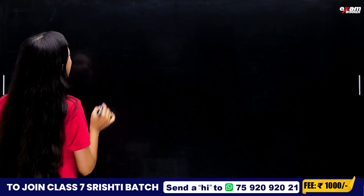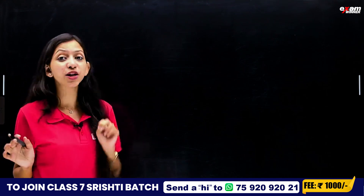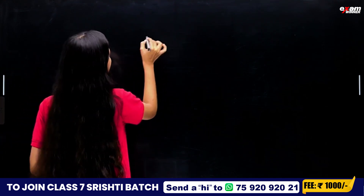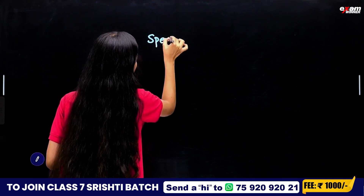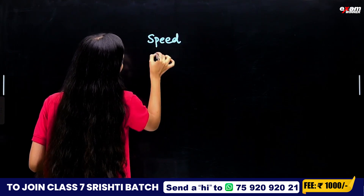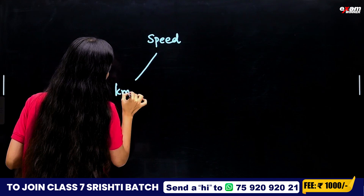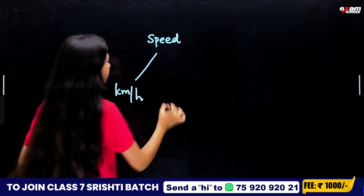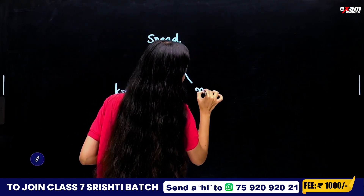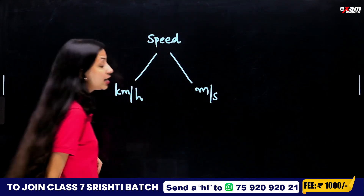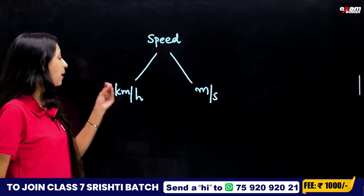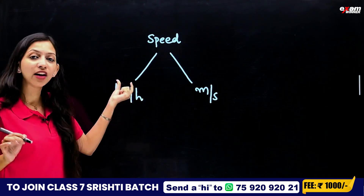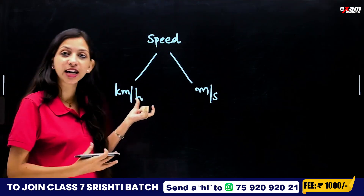We have another question. Let's take the speed in two units. 1 km per hour is one unit. The distance is 1 km. The time is 1 hour.